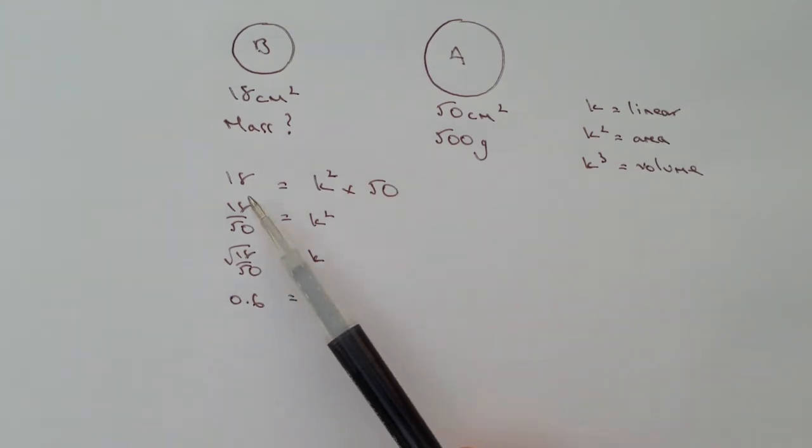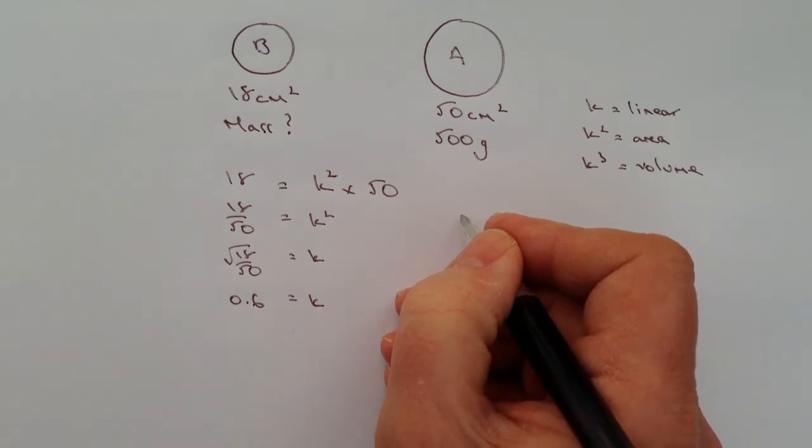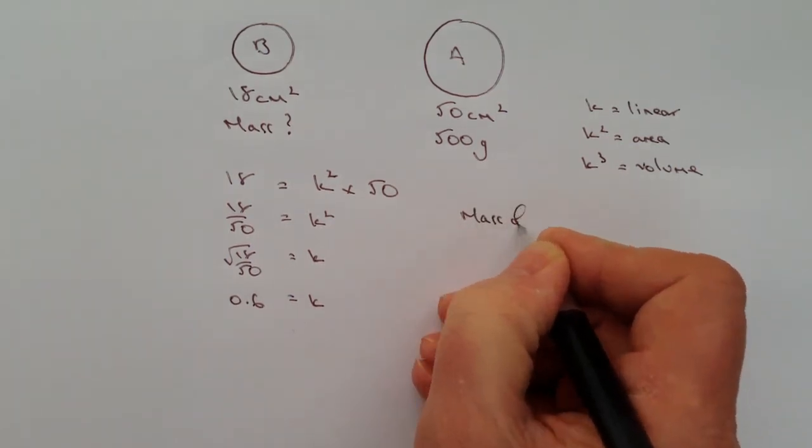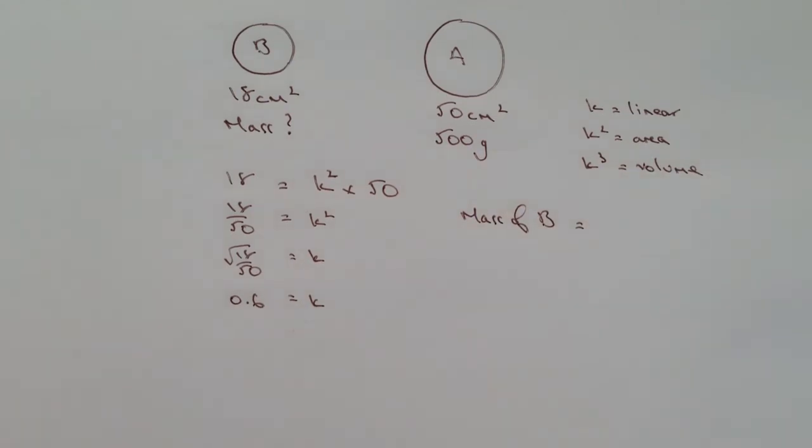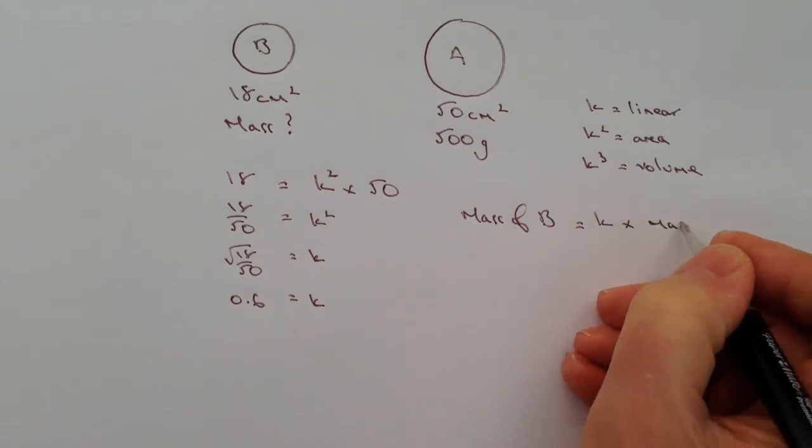If I can say there's a relationship between the surface areas and that's K squared, I can also say that there is a relationship between the masses. So the mass of B, which is what we're trying to find out, is going to be equal to K times the mass of A.